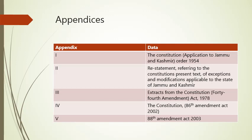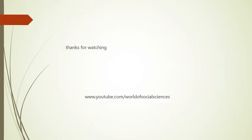Now, regarding appendices: the first appendix is about the Constitution Application to Jammu and Kashmir Order, 1954, which has since been amended. The second appendix includes restatements referring to exceptions and modifications for Jammu and Kashmir. The third is an extract from the Constitution 44th Amendment Act, 1978. The fourth is the Constitution 86th Amendment Act, 2002, and the fifth is the 88th Amendment Act, 2003.